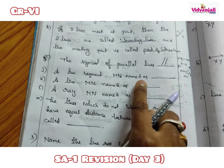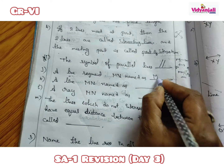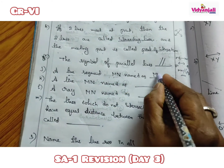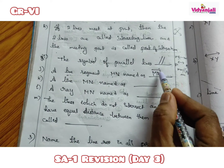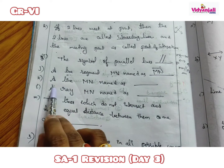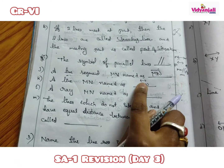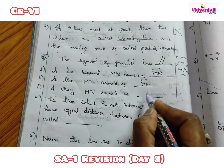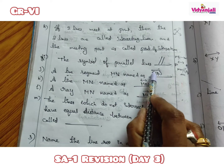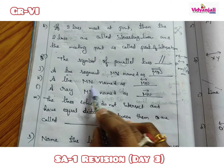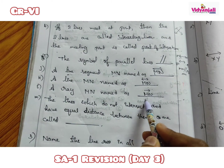A line segment MN is named using the line segment symbol written over the letters MN. A line MN is named with a line symbol over the letters. A ray MN is named with a ray symbol over the letters. To name each, you keep the corresponding symbol over the two letters.